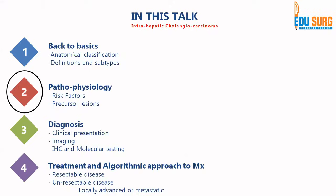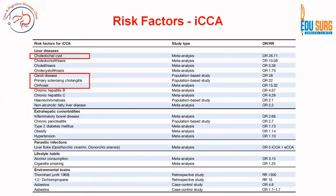The most commonly studied risk factors for ICCA are Caroli's disease, primary sclerosing cholangitis, cirrhosis, and choledochal cysts, in that order. The odds ratio for developing ICCA is nearly 38 for Caroli's disease and 22 for primary sclerosing cholangitis. Other significant risk factors include cirrhosis and choledochal cysts. Additional risk factors are CBD stones, gallstones, and chronic hepatitis B and C.